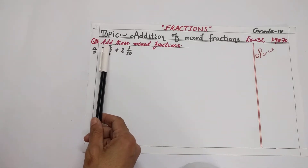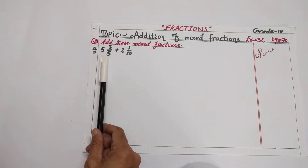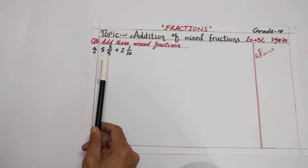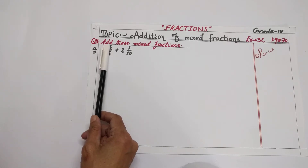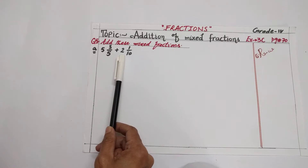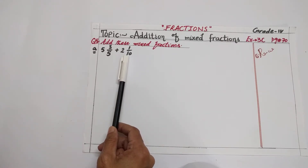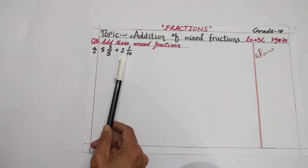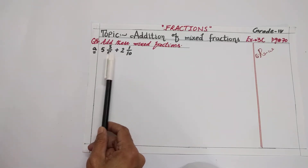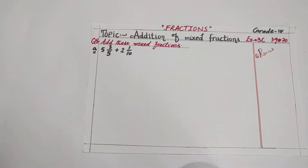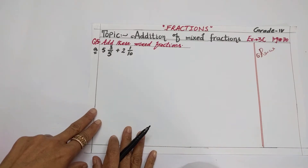Let's start how to add mixed fractions. I will explain with the help of an example. The example is: add the mixed fractions — first one is 5 and 3 by 5, plus 2 and 1 by 10. Here, 5 and 3 by 5 is a mixed fraction and 2 and 1 by 10 is another mixed fraction, because 5 is a whole and 3 by 5 is a proper fraction. A proper fraction is when the numerator is less than the denominator.